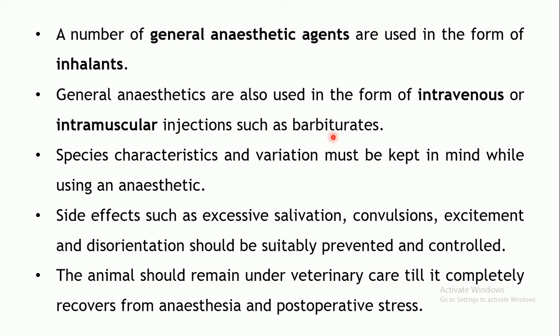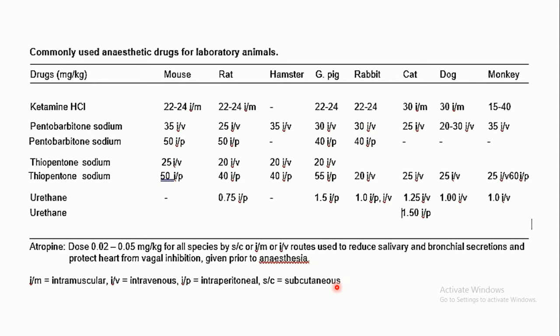General anesthetics depress the entire CNS, rendering the animal unconscious. These are given as inhalants or sometimes as intravenous or intramuscular injections — for example, barbiturates. When administering a general anesthetic, select the appropriate agent for the species. Side effects such as excessive salivation, excitement, and disorientation should be prevented using pre-anesthetic medications such as atropine. Veterinary care should be available during the entire procedure and in the post-operative period.